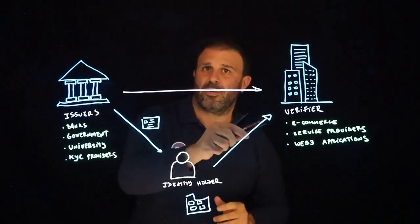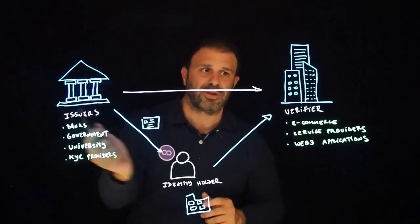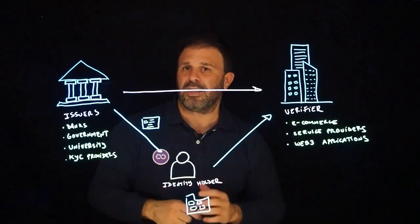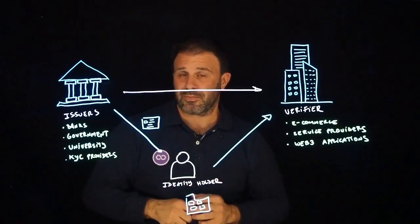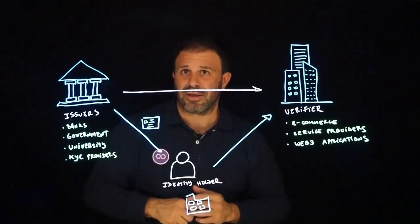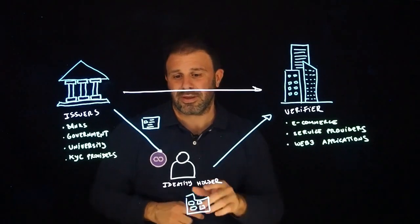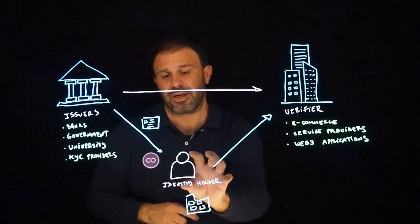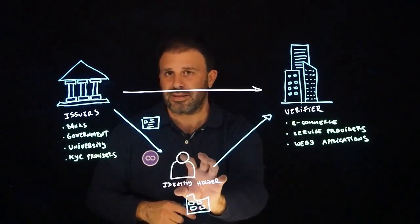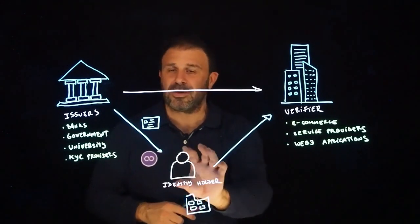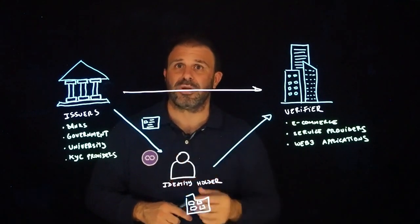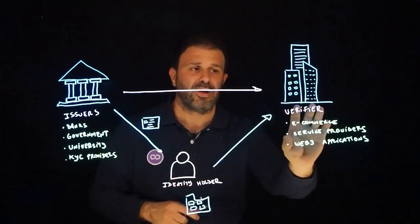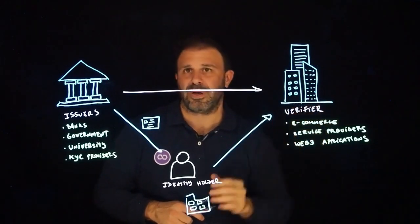This triangle of trust, where the trust is moved from the issuers to the verifiers, is a key idea of self-sovereign identities. The second pillar is the decision that the identity holder will be in control of these credentials. These credentials are stored in the identity holder's wallet, and the individual keeping these credentials will decide how much they share with each one of these verifiers.